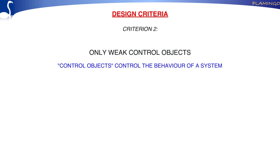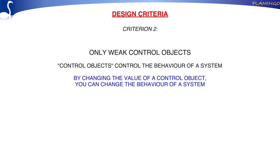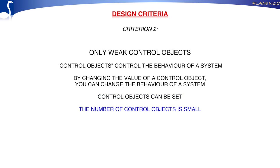The second design criterion is that only weak control objects should be included. Control objects are objects that control the behavior of the system — if you change a control object, the system will behave differently. So control objects are always settable. There are not many objects that you can set, and if you can set them, they do not have a lot of impact on the system in general.